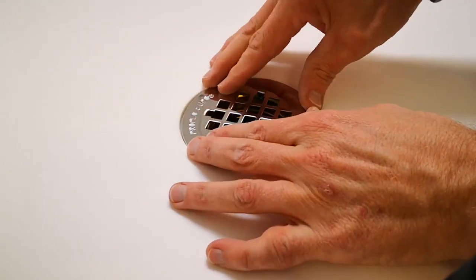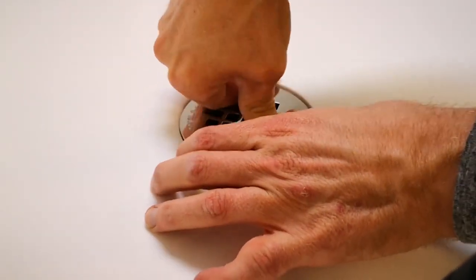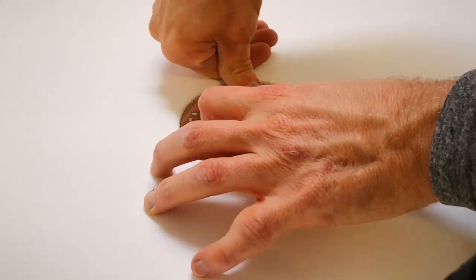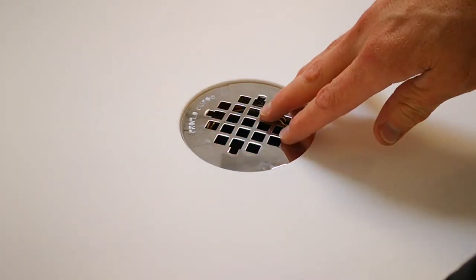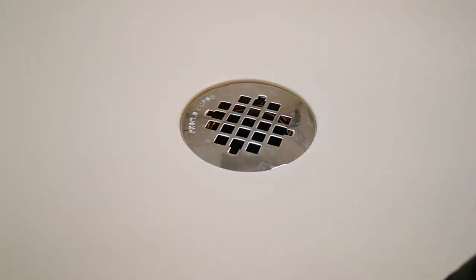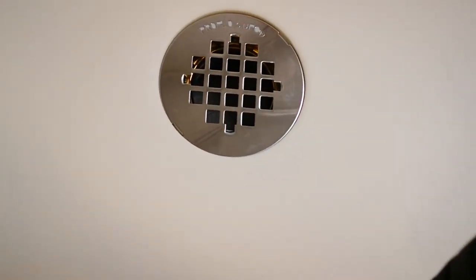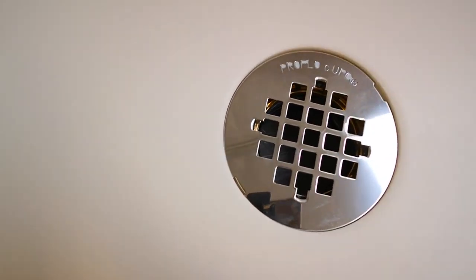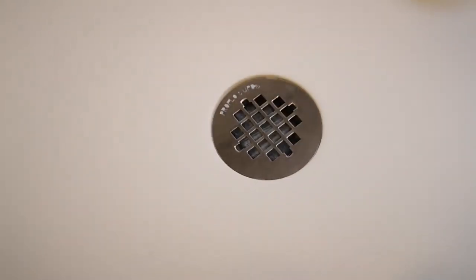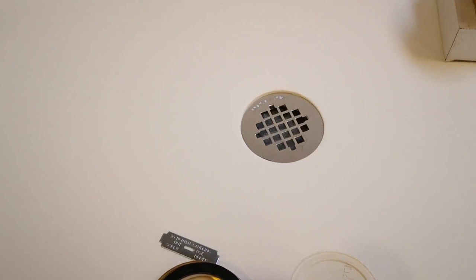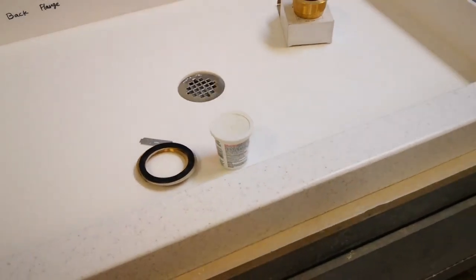And then this will fit in. So, and that's the finished look of the drain. Make the water tight seal. And that's the finished look of a solid surface shower drain on the shower pan assembly.